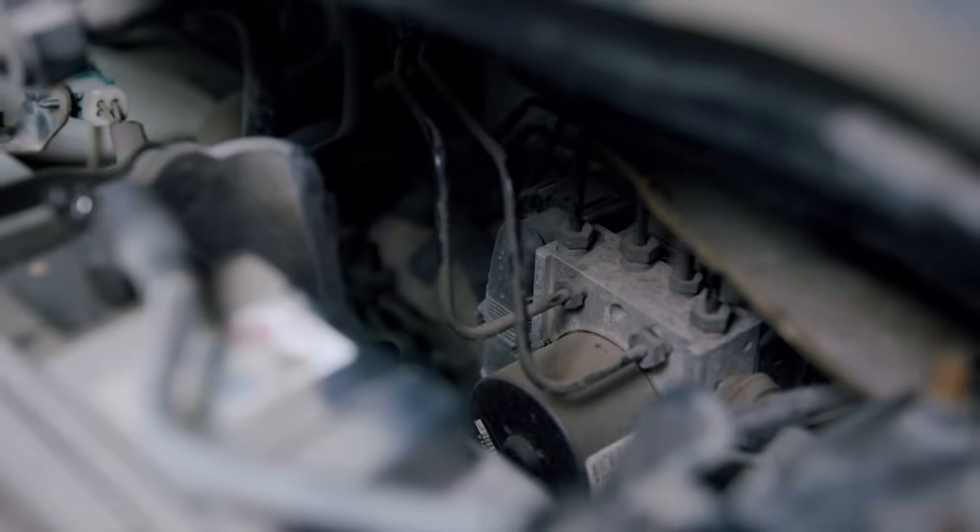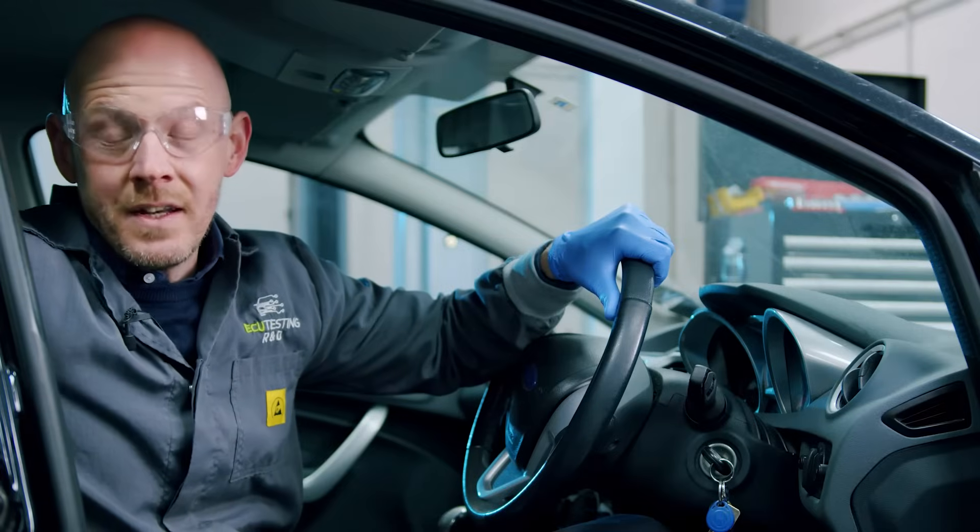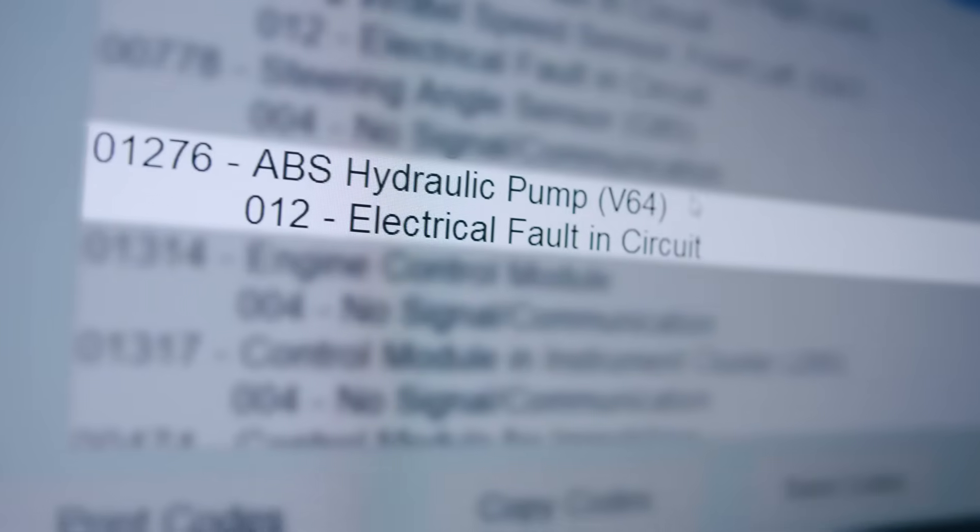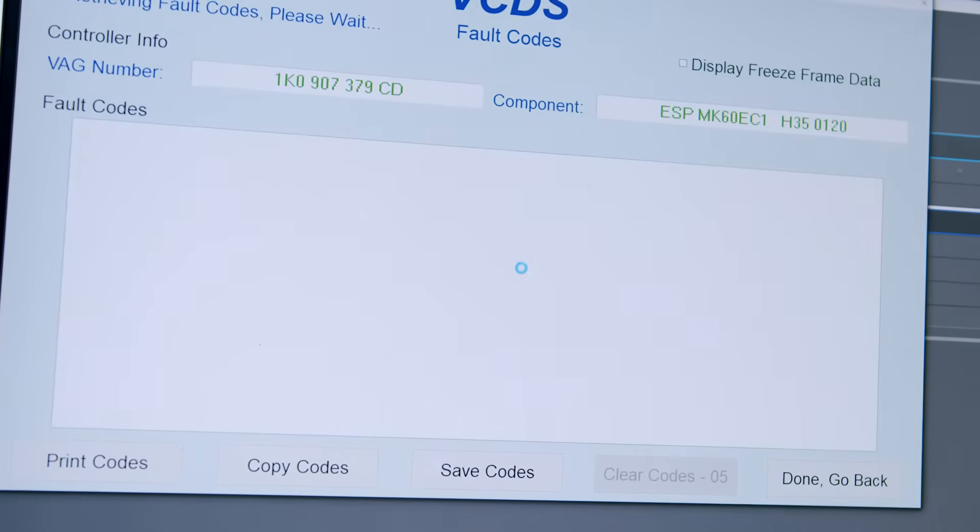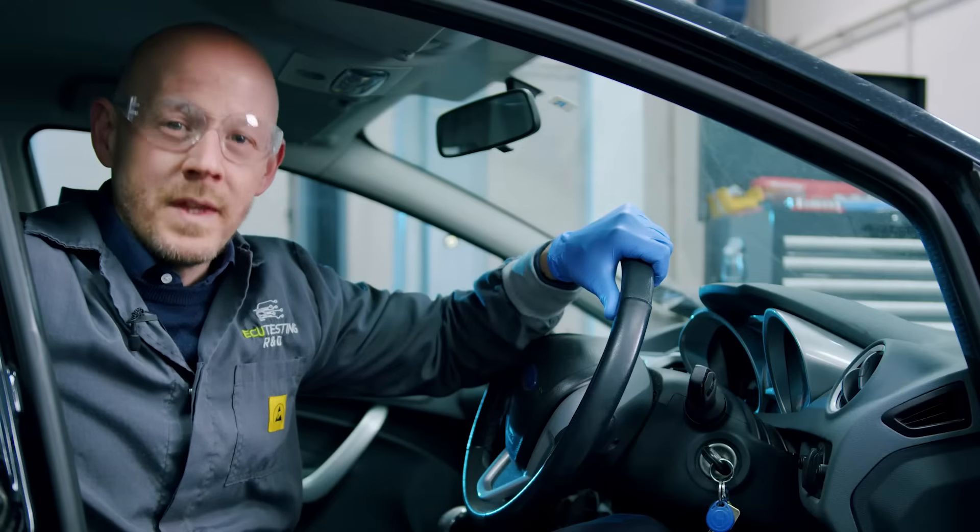This can be attempted multiple times to identify the fault and in the event nothing happens, check the codes to see if the fault has returned and try clearing it again. If the fault is permanent, then carry on with the next step.